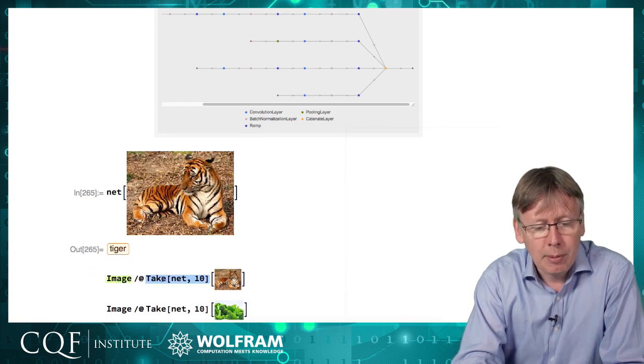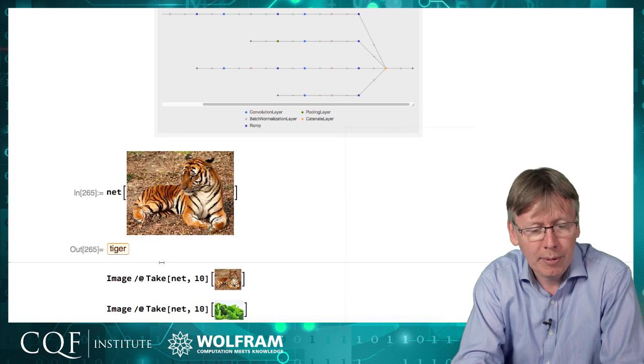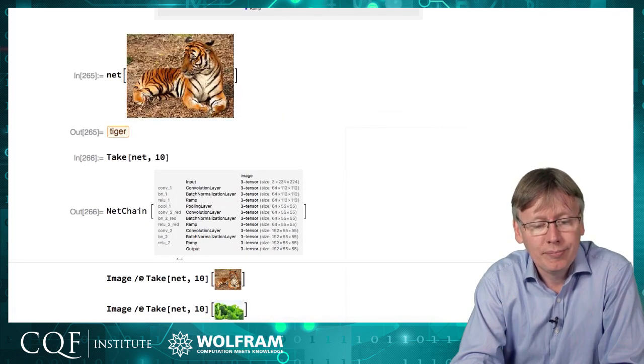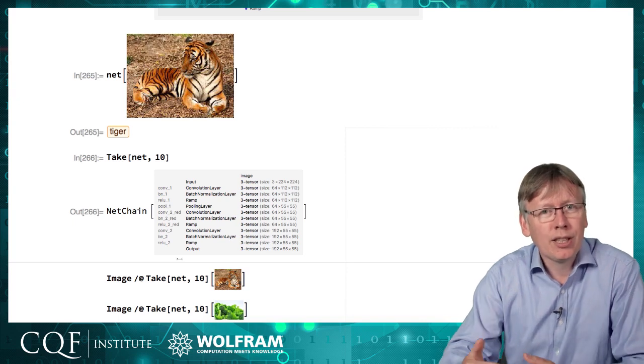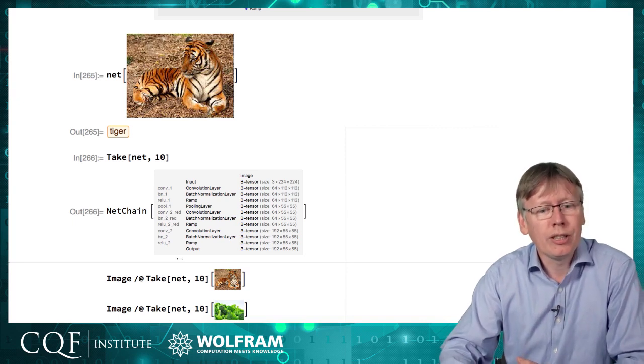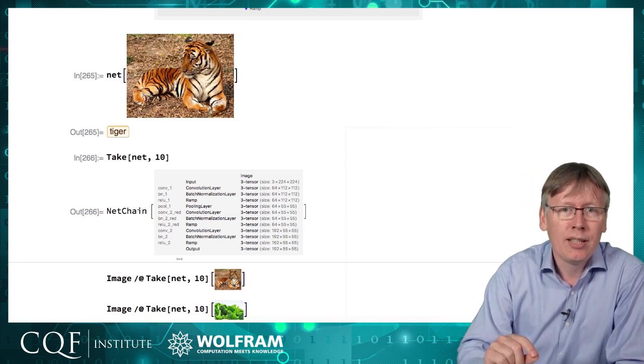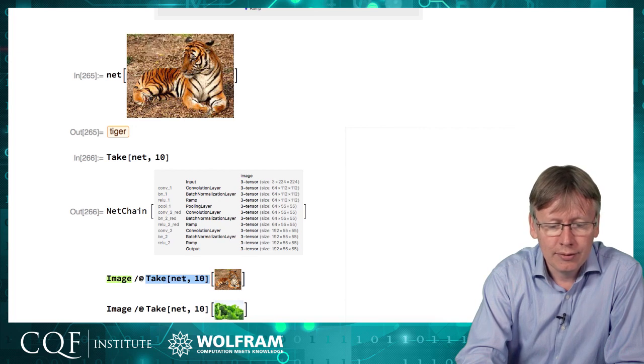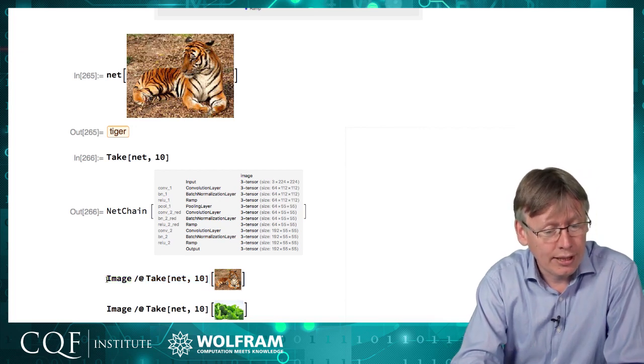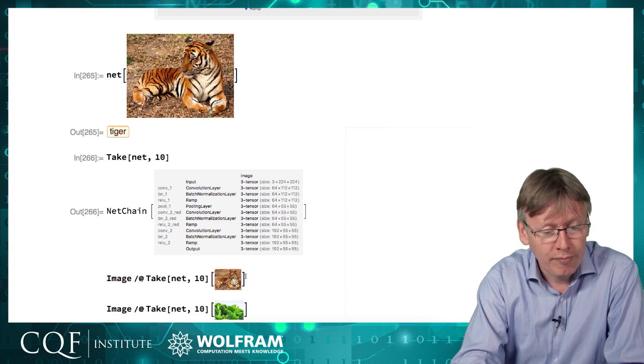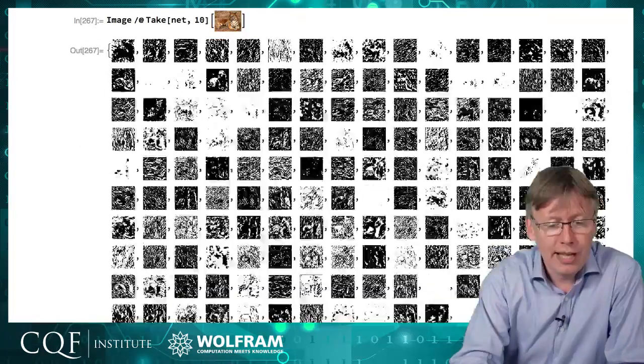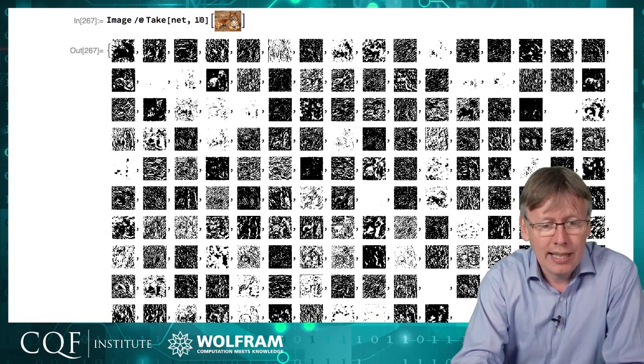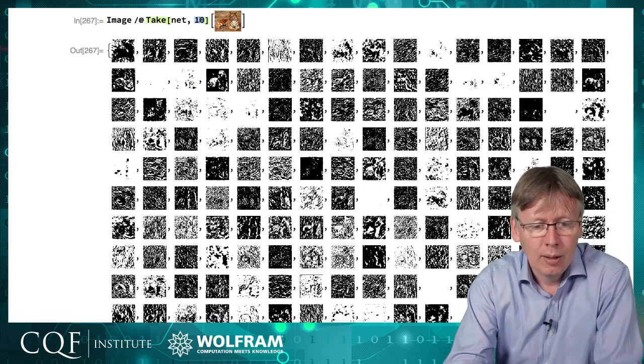One thing I can do is I can just take part of that, I can transform the thing and make a simplified version of the model. And so here are the first ten steps of that model. Now, we haven't got to the end of the process and so we're not going to be able to use it to identify. All we'll see is what layer ten is seeing within the image. So I can apply that to the tiger and we're going to get matrices out so I'm going to ask each of those matrices to be turned into an image. And what we see is effectively the insides of the brain of the neural network at layer ten. And we can jump through this at different layers and see how the images are being progressed.